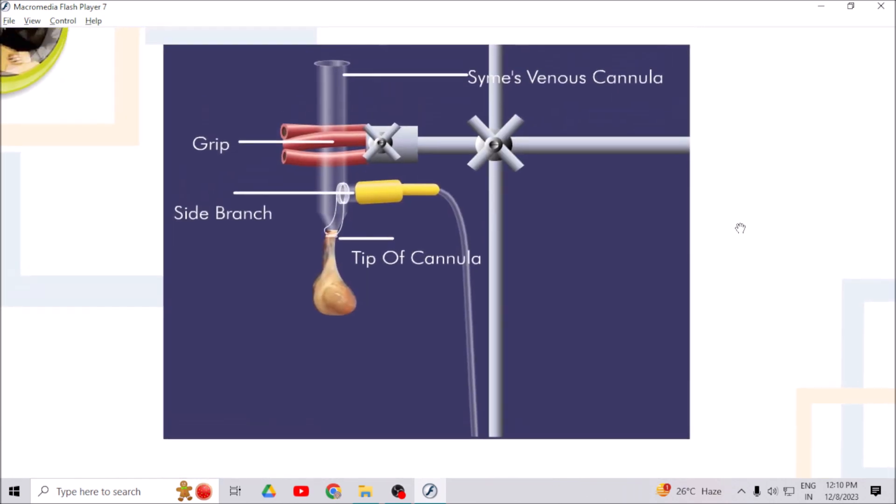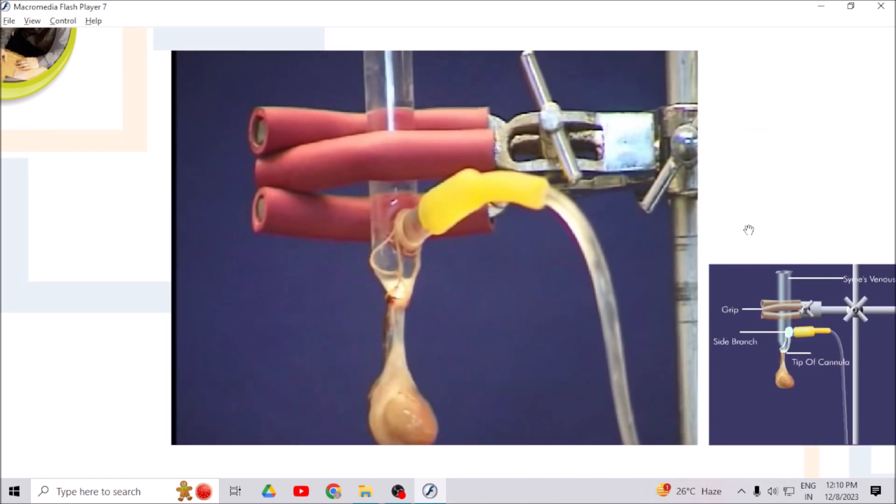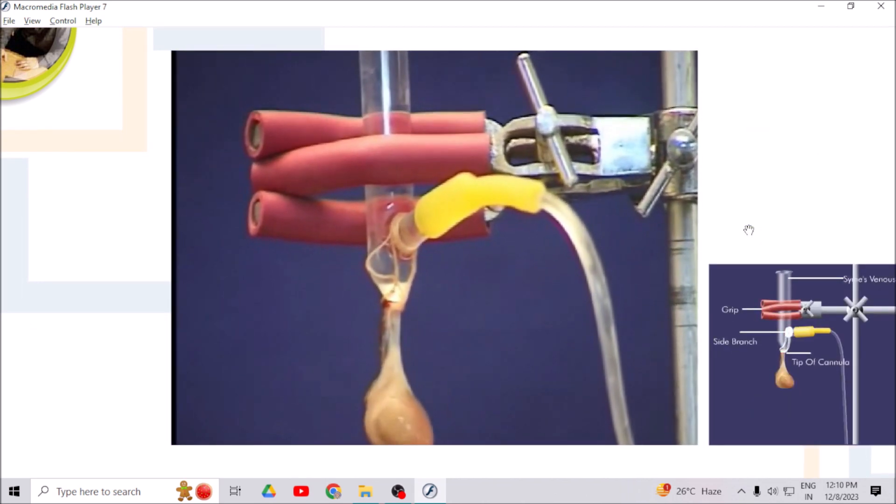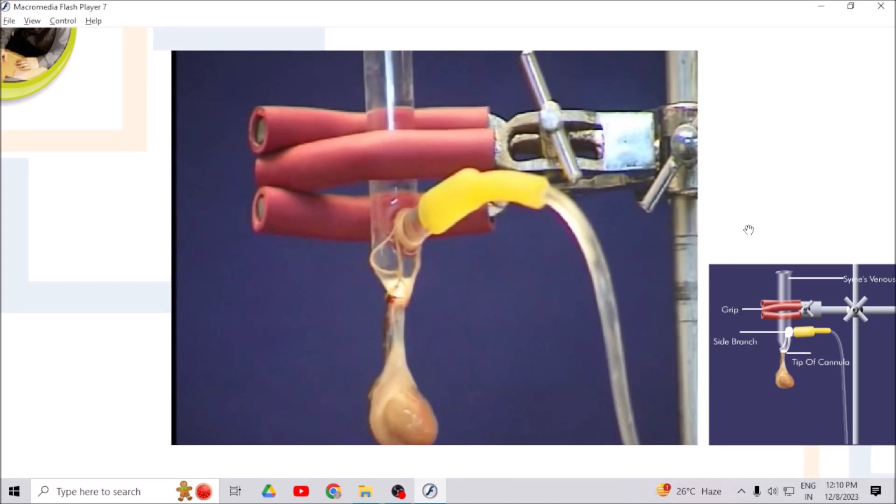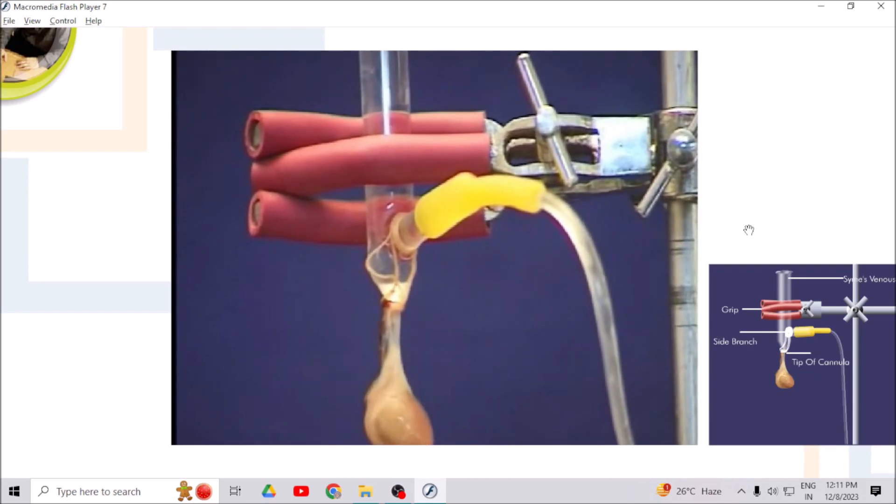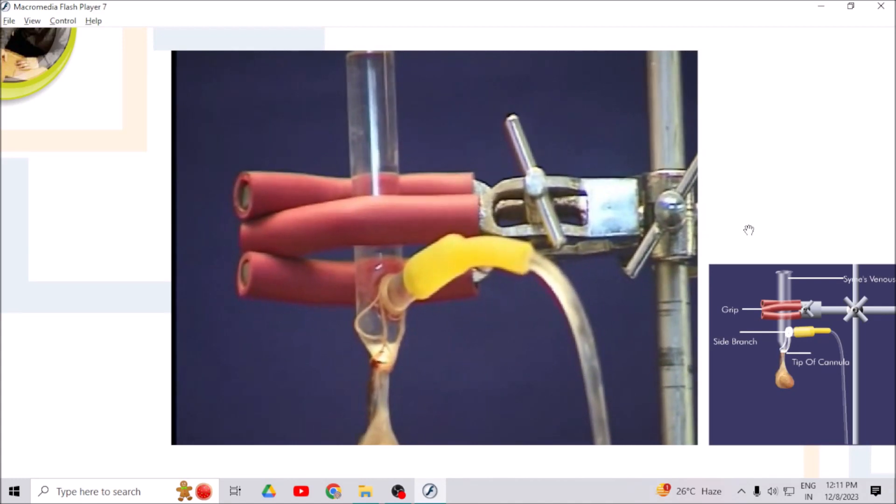Sinus venosus cannula is made up of glass and consists of tip to insert into sinus venosus, grip for holding heart preparation, and side branch to connect perfusion bottle.